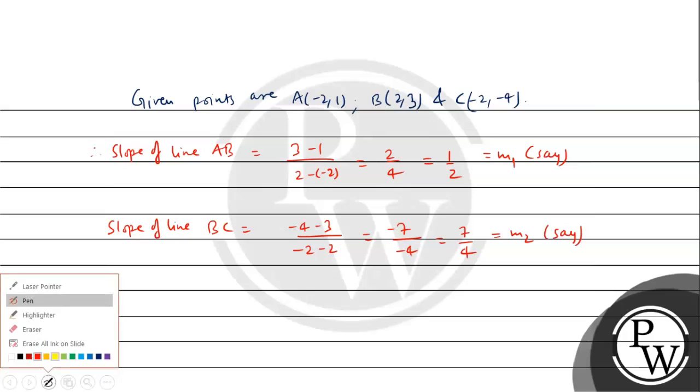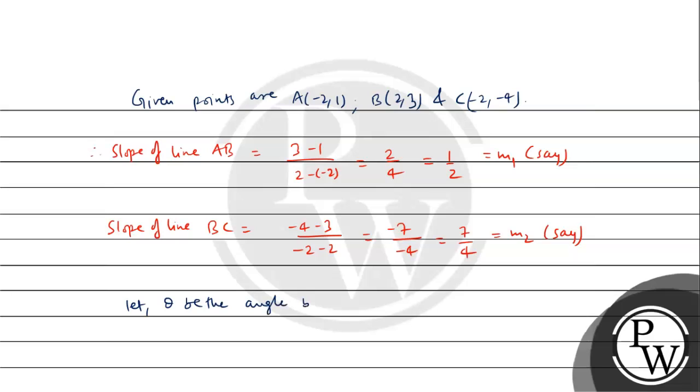Now, let's consider, let θ be the angle between AB and BC. Tan θ will be equal to modulus of M1 minus M2. That is 1/2 minus 7/4, whole upon 1 plus M1 M2. That is 1 plus (1/2) into (7/4).